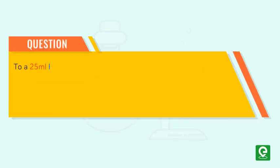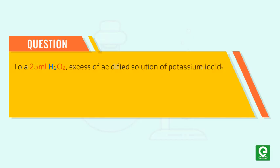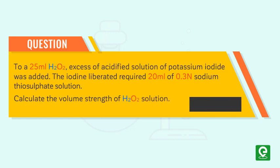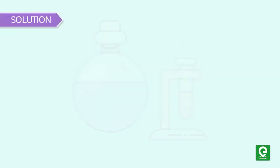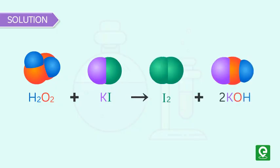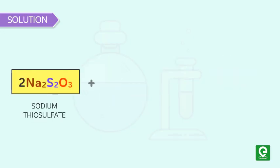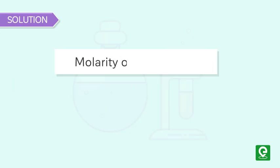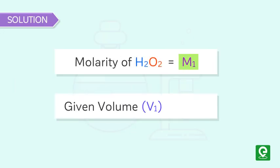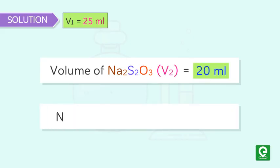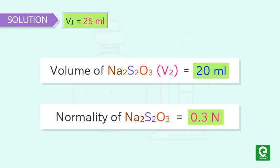Question 2: To a 25 ml H₂O₂ solution, excess acidified potassium iodide was added. The iodine liberated required 20 ml of 0.3 N sodium thiosulfate solution. Calculate the volume strength of the H₂O₂ solution. (IIT JEE 1997) Solution: Catalytic decomposition of hydrogen peroxide by potassium iodide releases iodine and forms potassium hydroxide. Sodium thiosulfate reduces iodine back to iodide, producing sodium tetrathionate and sodium iodide. Let molarity of H₂O₂ = M₁, V₁ = 25 ml; volume of Na₂S₂O₃ V₂ = 20 ml, normality N = 0.3.